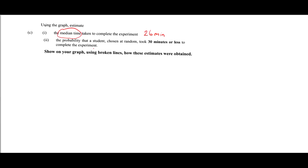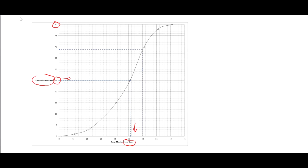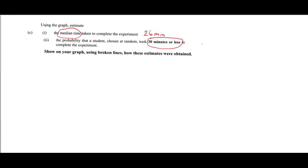The second part asks us to find the probability that a student chosen at random took 30 minutes or less. Find where 30 minutes is on the time axis, go up until we meet the curve, then go horizontally to the cumulative frequency axis. Reading off, we get approximately 39 students scoring 30 minutes or less. Since there are 50 students in the class, the probability is 39 over 50.